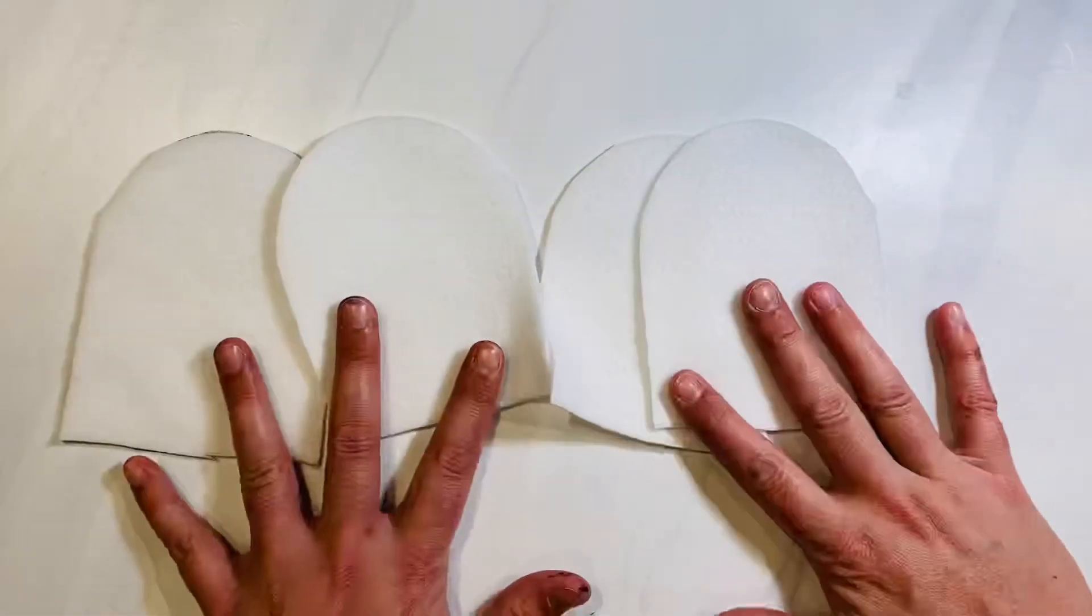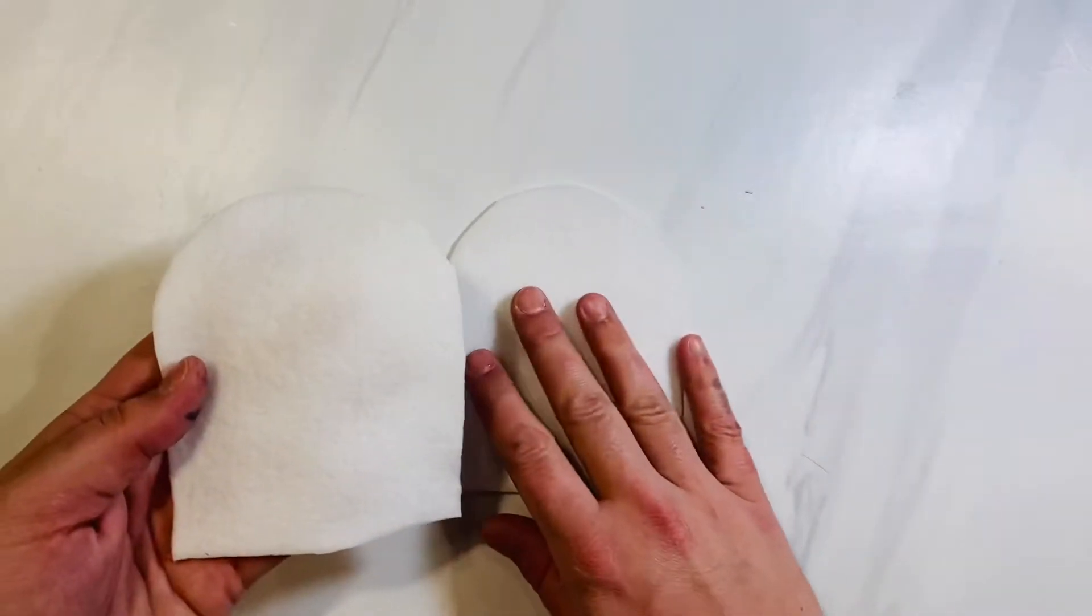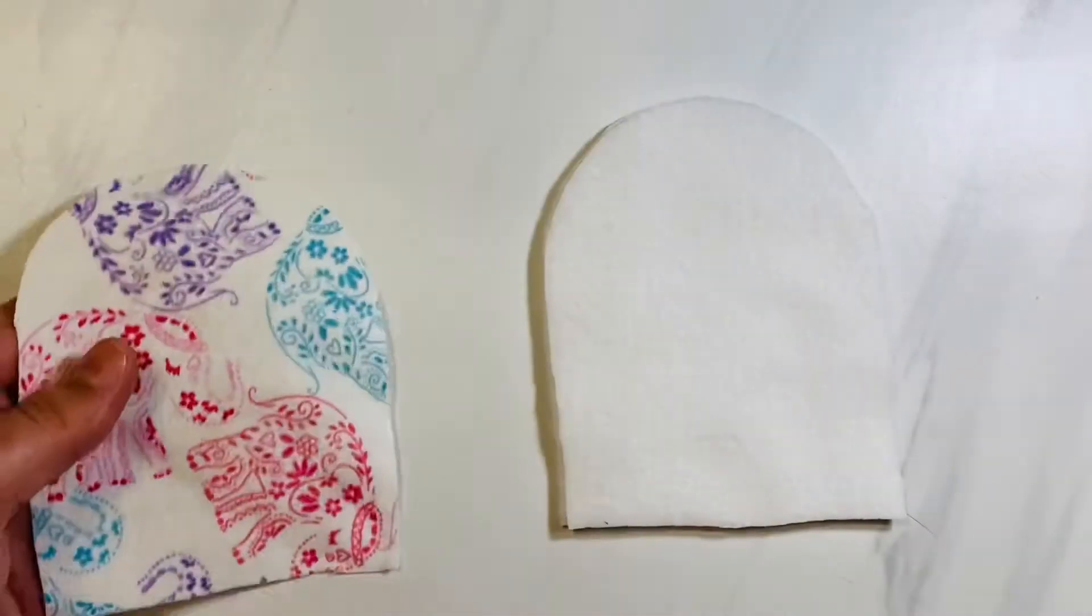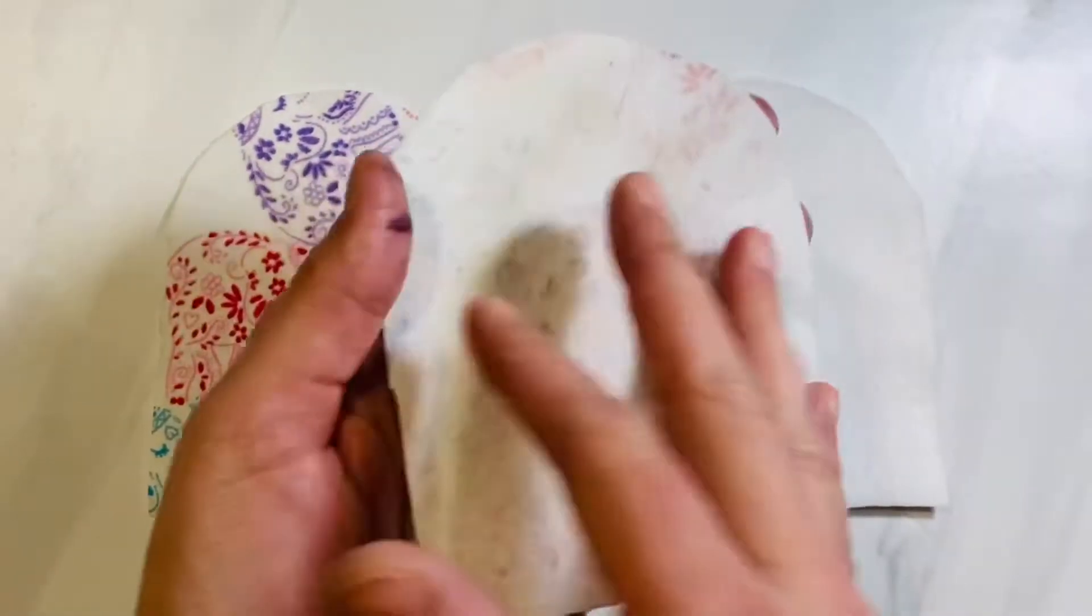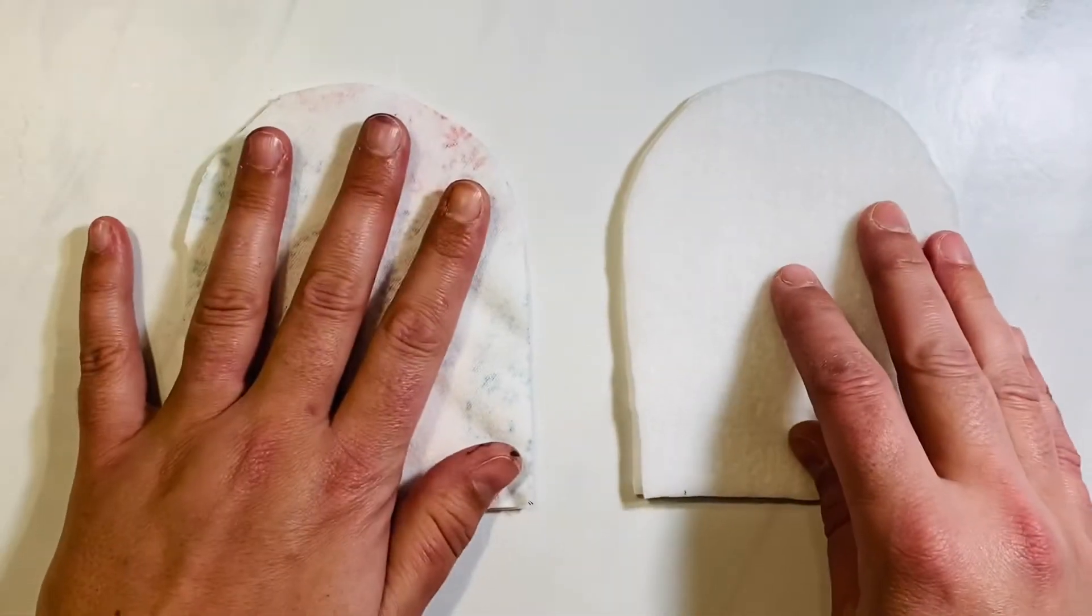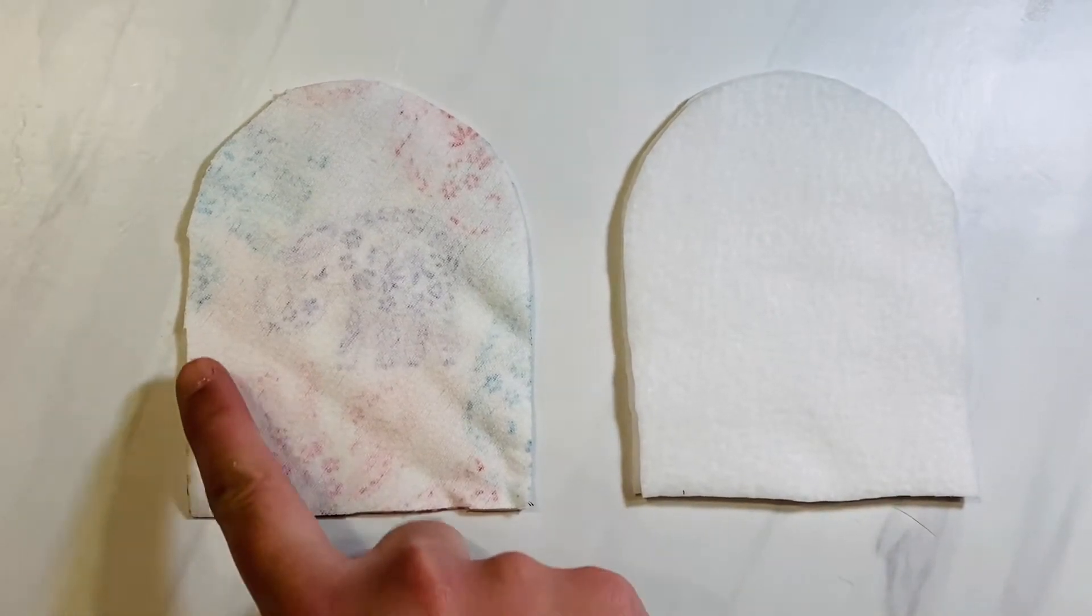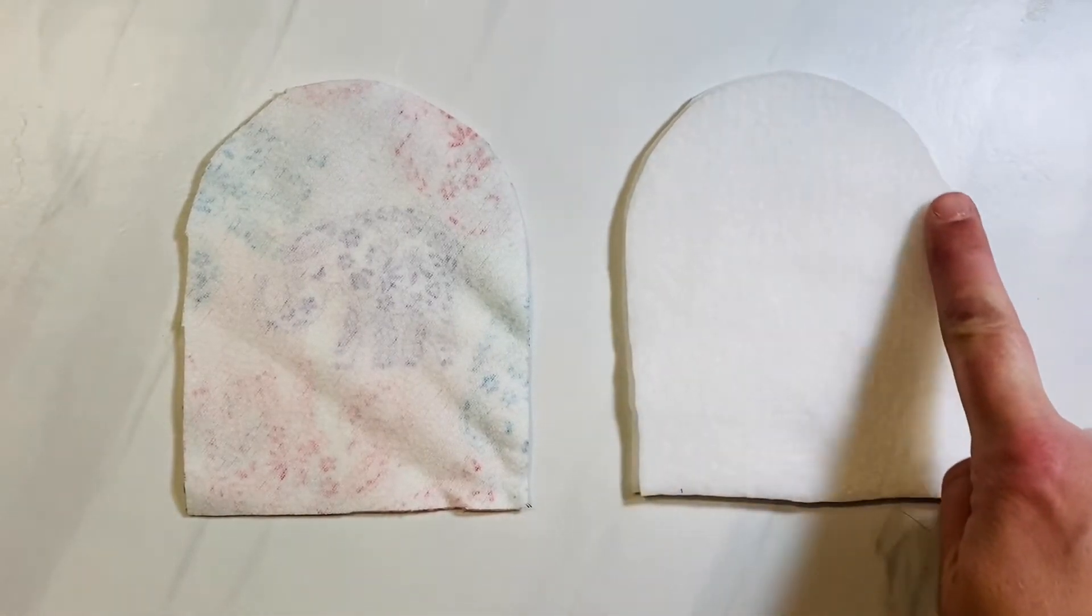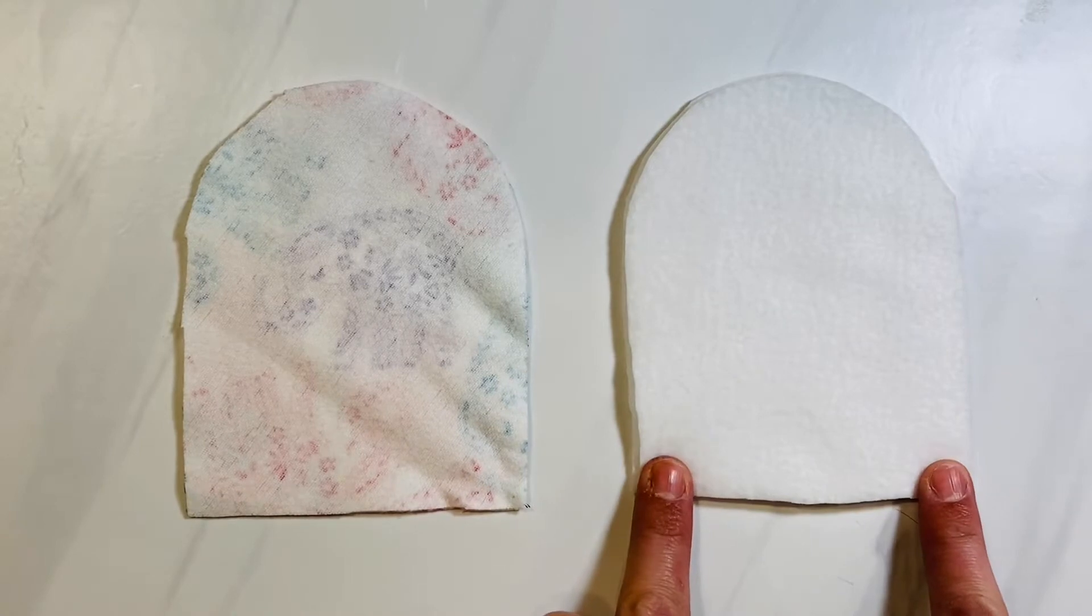Now that we have all of our mitten pieces cut out, we're going to work on making our first mitten. With the right sides together, you're going to place your fabric on top of each other—that's the pretty sides of the fabric. Do it for the lining and do it for the outer piece of your mitten. Now you're going to sew using a one-fourth inch seam allowance all the way around the curve of each of your mitten, leaving the bottom piece open. You're not going to sew those bottom pieces closed.